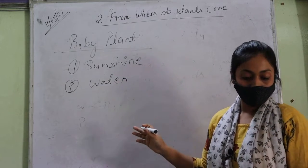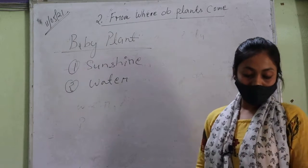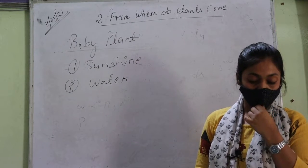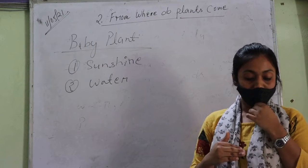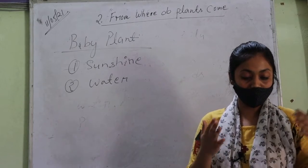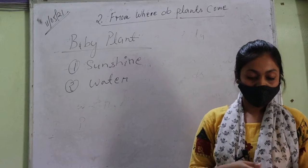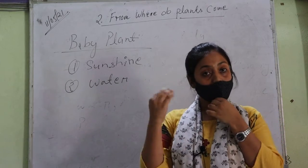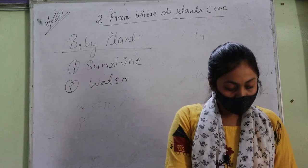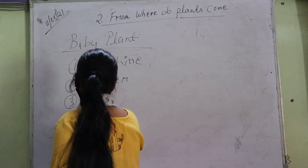Rain gives the seed water, so they grow with the help of water and rain. Seed baby plant ko grow karne ke liye barish ka paani chahiye hota hai. Paani zaroori hota hai jo ki barish chahiye hota hai.